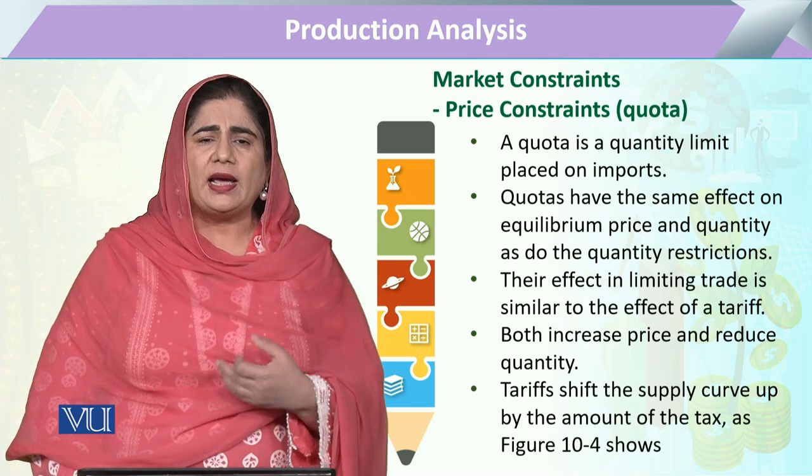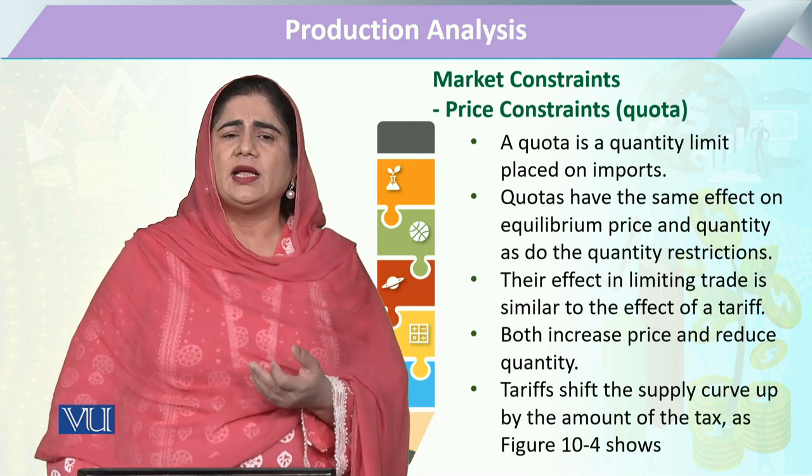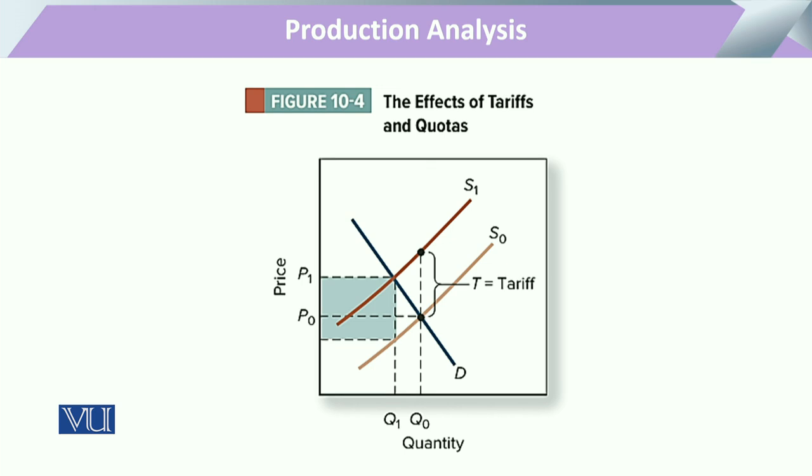We are explaining this concept of tariff and quota with this diagram. When we see that the demand for that commodity that is being produced, it is shown by this line that is downward slope and shown by D. When we see that there is a supply line of S naught and that S naught line is equilibrium with this demand line at point E. At this point in the market there will be the price P naught and the quantity Q naught will be supplied in the market. But if we look at this point, if government or any agency imposes a quota.